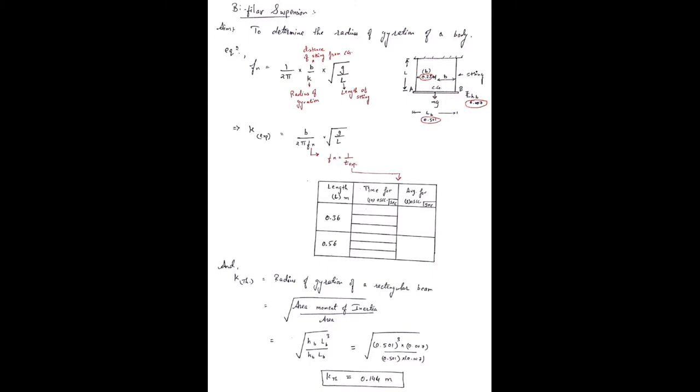Now as the beam is uniform, its center of gravity lies at the center of the body, at the midway distance between the two strings. The frequency of this system can be determined by equation 1 over 2π times B over K times root G over L. Here B is the distance of CG from either string, K is radius of gyration, L is the length of suspension, and G is the gravitational constant, that is 9.81.